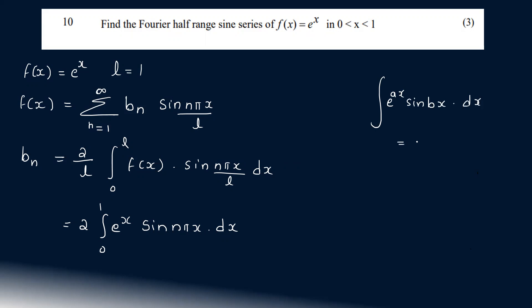That is equal to e^(ax)/(a² + b²) into (a sin(bx) - b cos(bx)).